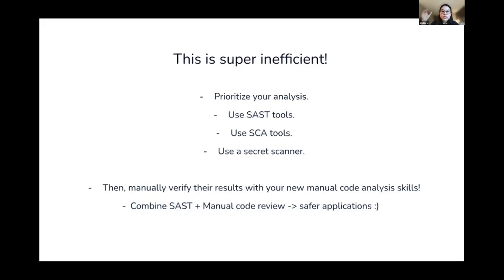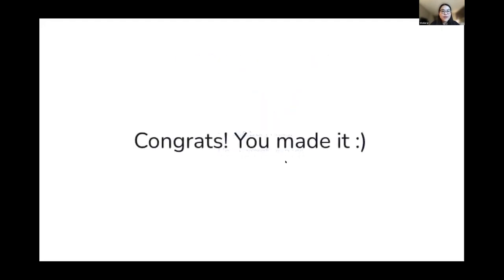The issue is that code scanning tools are never 100% accurate. The best approach is to use these tools first to identify as many suspected vulnerabilities as possible, then conduct manual code review on the areas flagged as suspicious by your tools, and validate those results via manual analysis. This way you can ensure that as few bugs as possible make it to production.